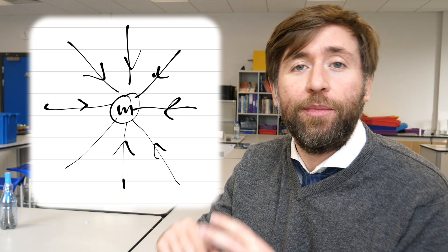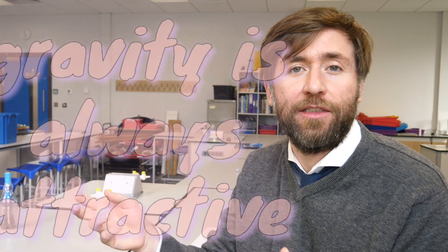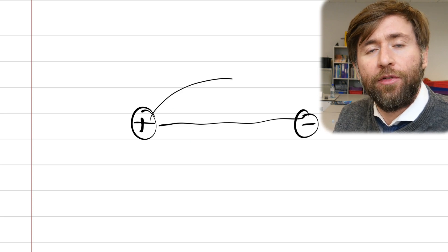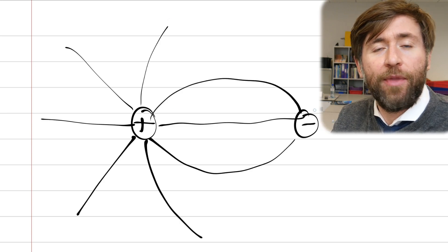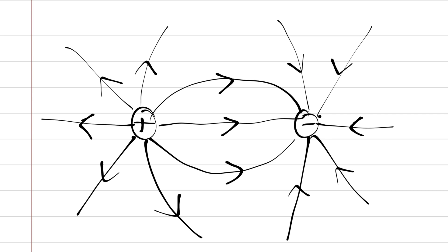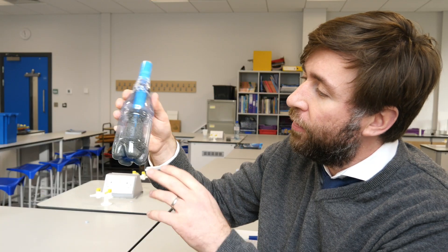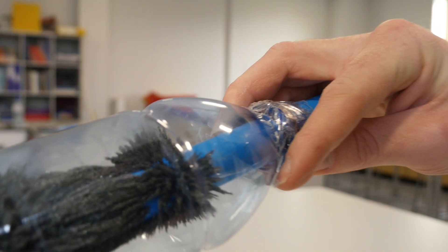Gravitational fields are different because they can only ever be attractive — you can't have negative mass, so all masses attract other masses. In an electric field we always draw the field lines pointing from positive to negative, and in a magnetic field we always draw field lines pointing from north to south. You need to be really familiar with the shapes of fields around charged particles or around magnetic objects like a bar magnet or a solenoid. Another really interesting difference is that you can have a point charge — a positive charge existing on its own — but you can't have a north pole without a south pole. You cannot have a monopole, a single-pole magnet. All fields are actually in three dimensions even though we draw them in two dimensions.